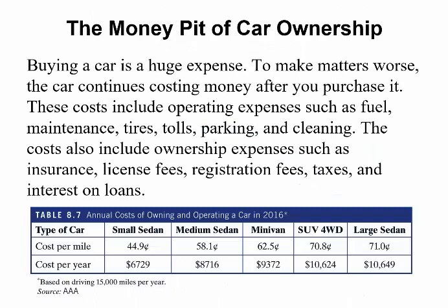Buying a car is a huge expense, and the car continues costing you money after purchase. Operating expenses include fuel, maintenance, tires, tolls, parking, and cleaning. Ownership expenses include insurance, license fees, registration fees, taxes, and interest on your loan. Looking at estimated annual costs of owning and operating a car — based on 15,000 miles per year from 2016 data — costs increase with vehicle size. For example, a full-wheel drive SUV can cost almost eleven thousand dollars per year to own and operate.